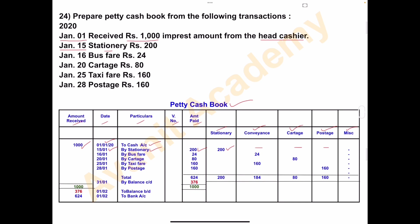Next, on January 16th, bus fare Rs. 24. Write in the solution: date 16th January, particulars: bus fare. Amount paid is Rs. 24. Bus fare and taxi fare all come under conveyance charges. So stationery column: nil. Conveyance charges column: write Rs. 24. Other columns: nil.